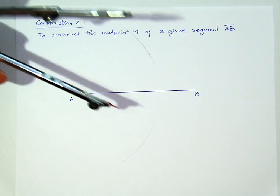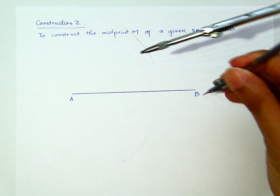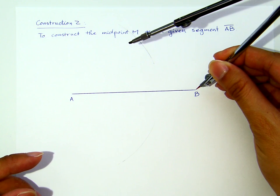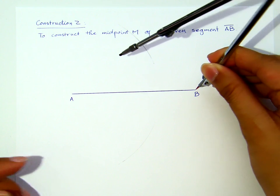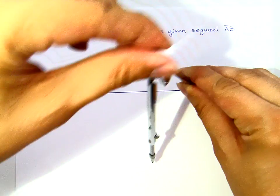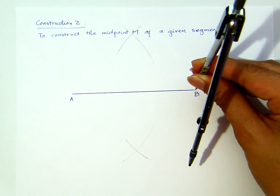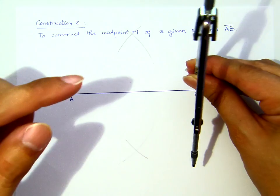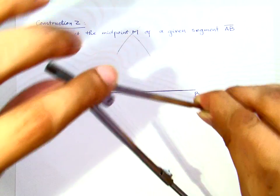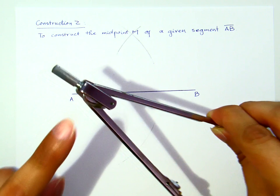Now, using exactly the same opening, do not change it. You put the pivot point at B, the pivot leg at B, and you swap it the same way. That's the reason why the angle here has to be strong enough, not to change easily.